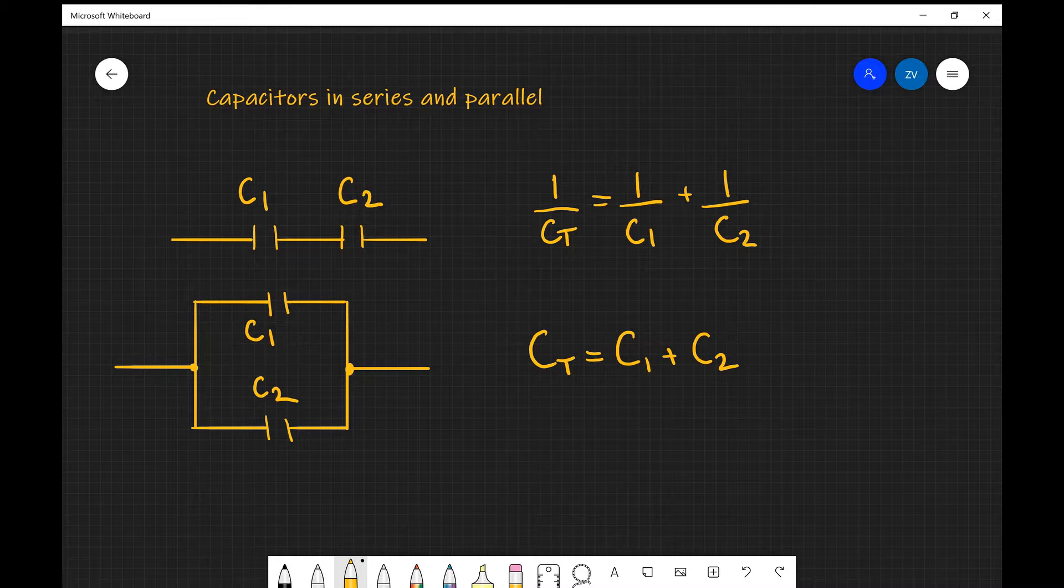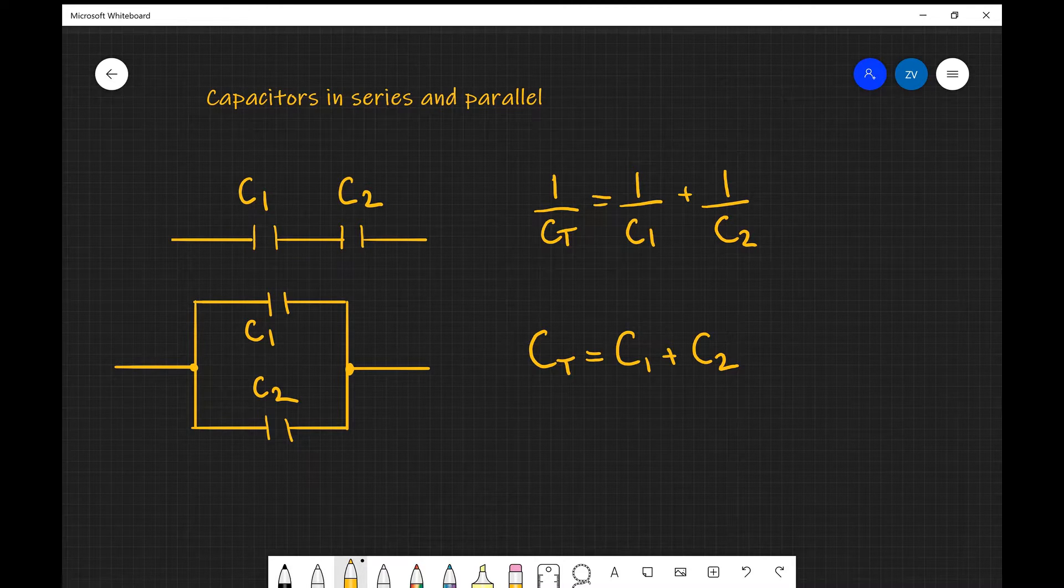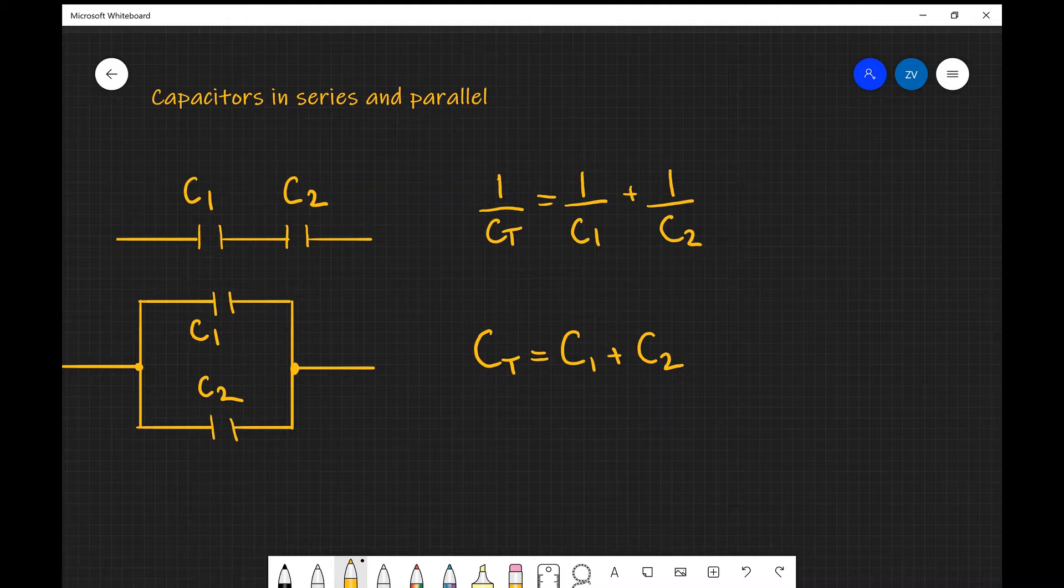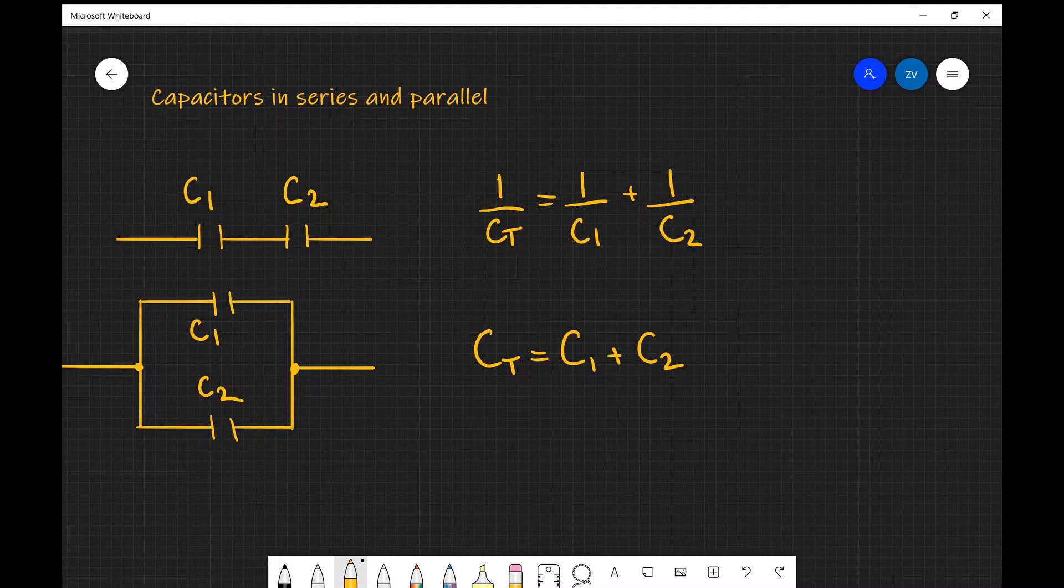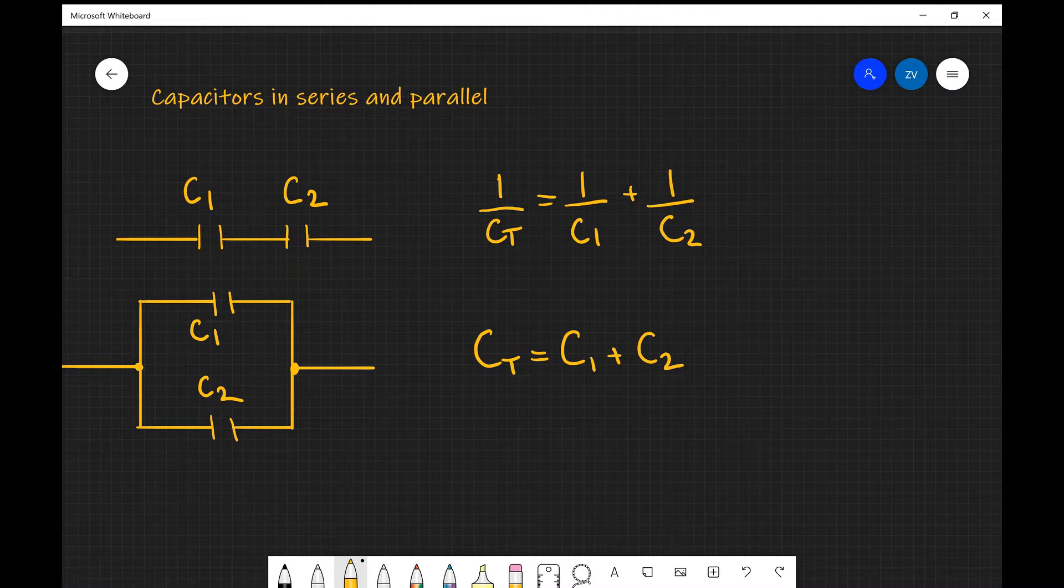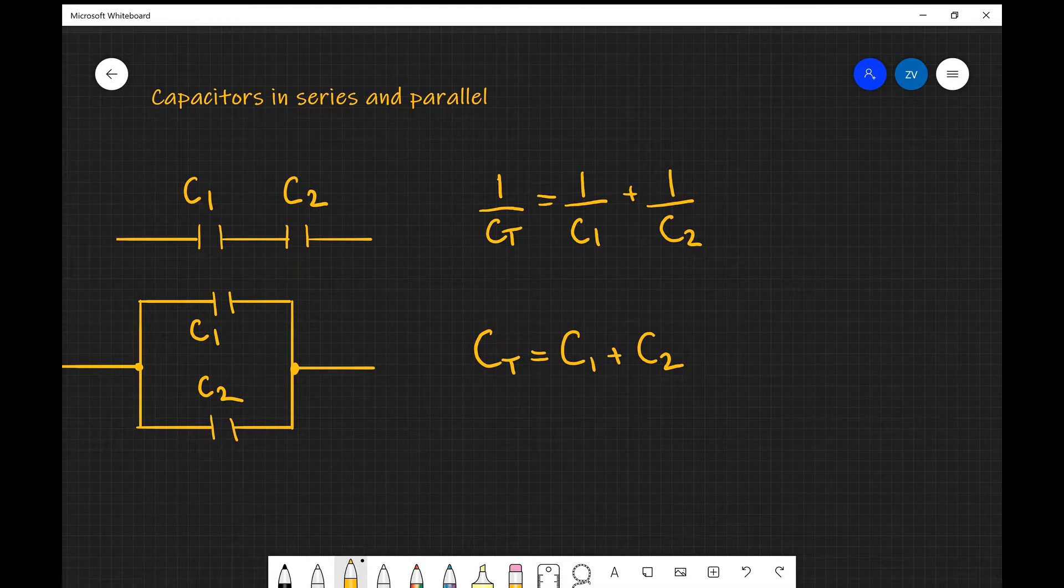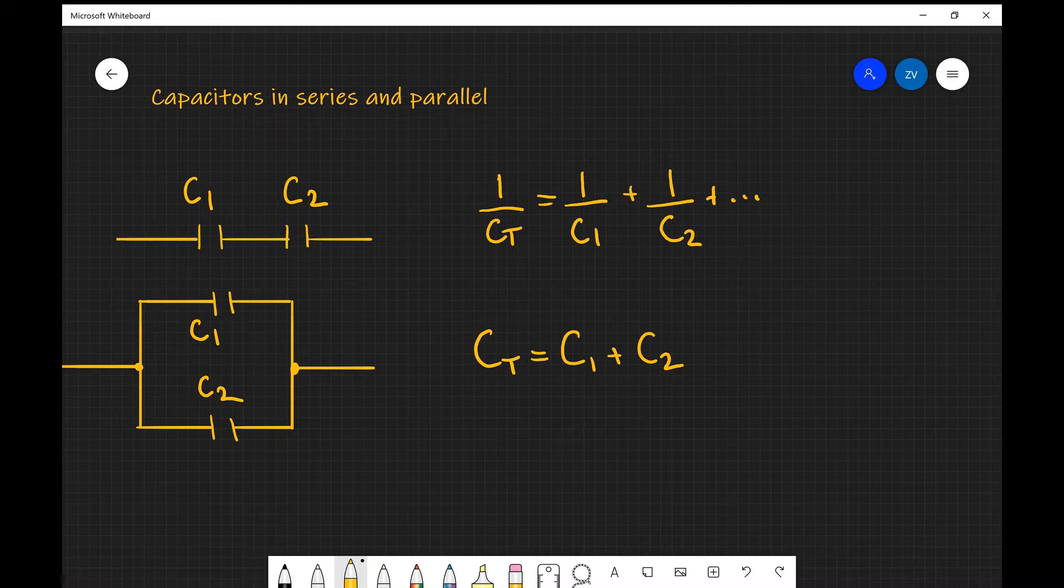For example, if we were to be adding two capacitors in series, we don't just add them. What we need to do is calculate 1 over the total capacitance is equal to 1 over C1 plus 1 over C2, where C1 and C2 are the individual capacitances, plus more if there were more.